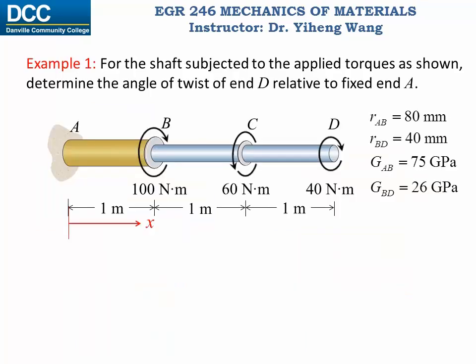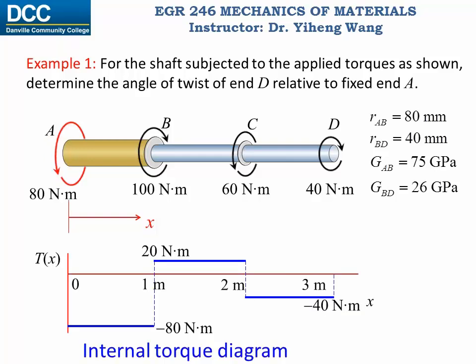Let's look at this example. For this composite shaft subjected to multiple applied torques as shown, we need to determine the angle of twist of end D relative to the fixed end A. To determine the angle of twist, we need the internal torque as a function of position — as done in an earlier video. Here is the result shown in the internal torque diagram. As you can see, we have three segments, and within each segment the internal torque, geometric property, and material property are all constants.